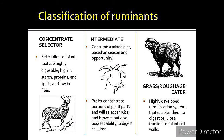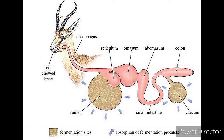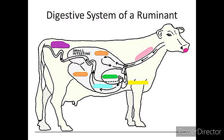Classification of ruminants includes concentrate selectors, intermediates, and grass eaters, as shown in the slide. Also watch the diagram — the summary of all discussion is here.